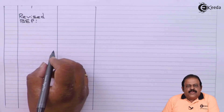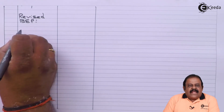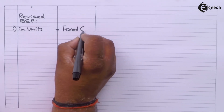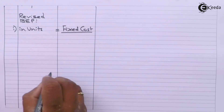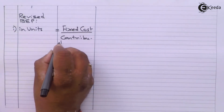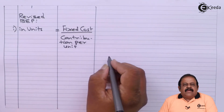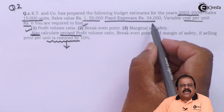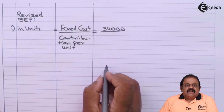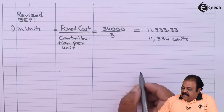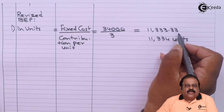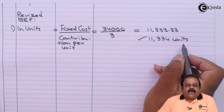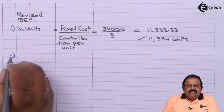Next we find the revised break-even point in units and in rupees. In units, the formula is fixed cost divided by contribution per unit. There is no change in fixed cost, which remains ₹34,000, divided by revised contribution per unit of ₹3. This gives 11,333.33 units, which we round off to 11,334 units.